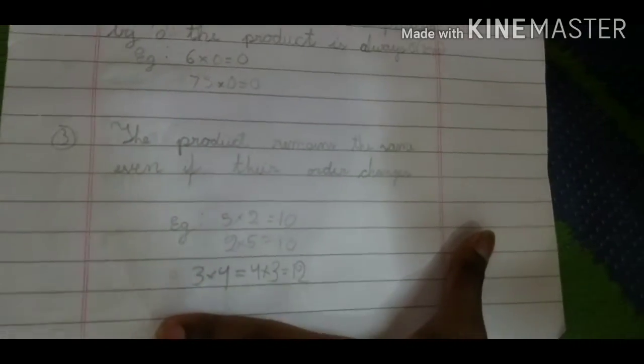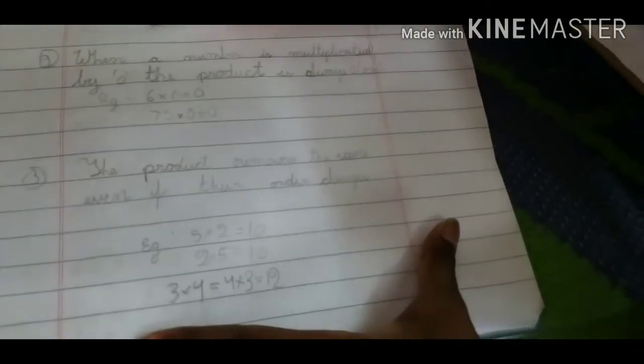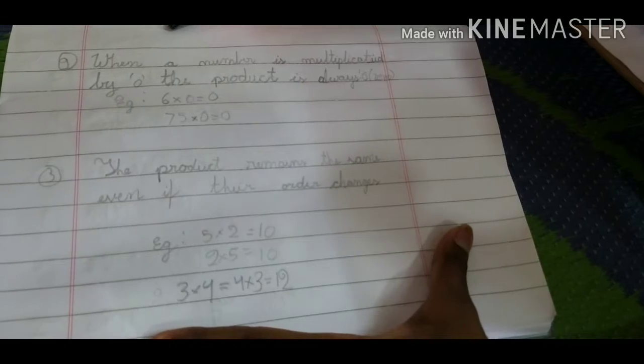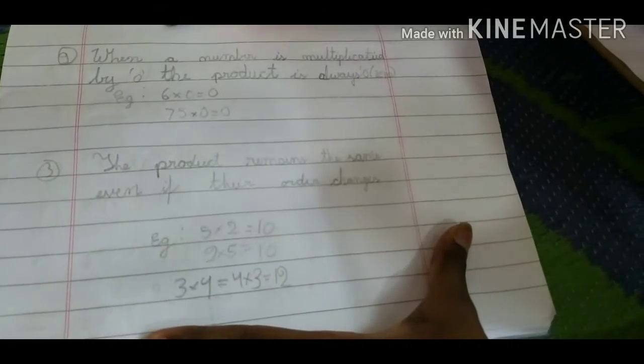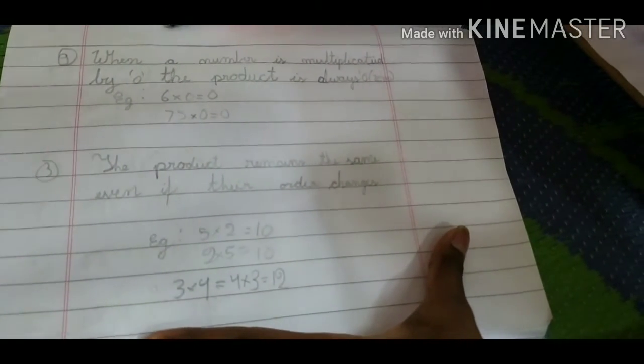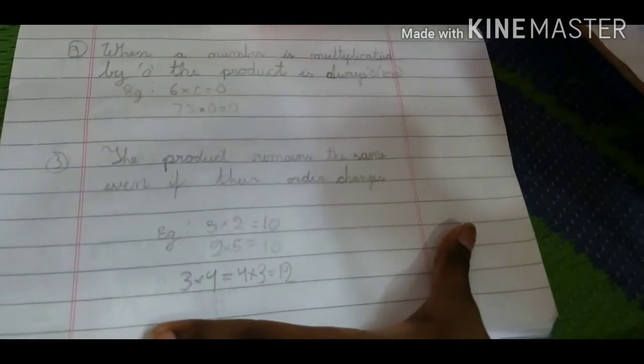Now the third property is the product remains the same when their order changes.